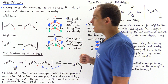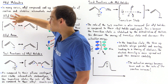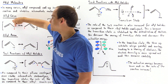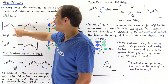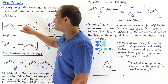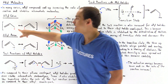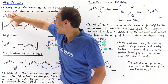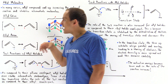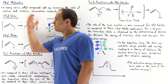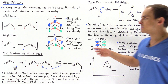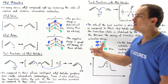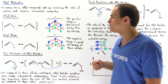An allyl cation is basically a molecule that contains three carbons. This carbon has one H group, this carbon has two H groups, and this carbon has two H groups as well. We have a positive charge on this carbon, and the two electrons in the pi bond basically jump back and forth between these two bonds. The actual molecule is an intermediate between these two resonant structures, making it more stable than the alkyl counterpart, which does not have resonant stabilization.